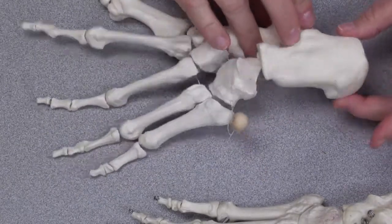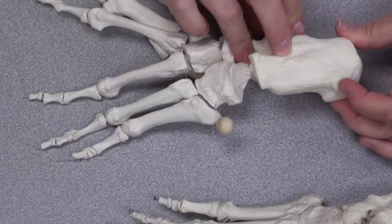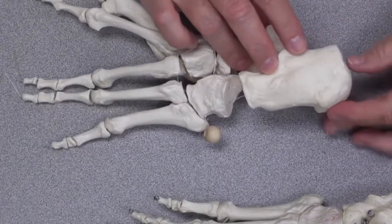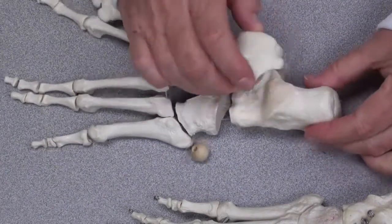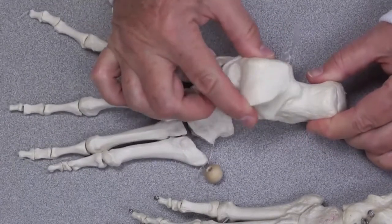So your heel bone basically has small bumps on the bottom of it. This is the posterior or backside of your heel bone. Resting on top of it is the talus.